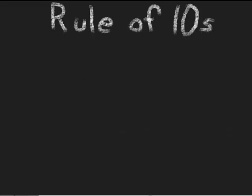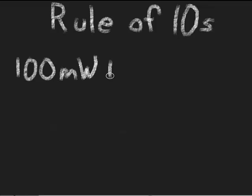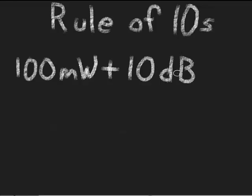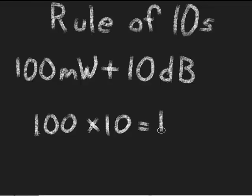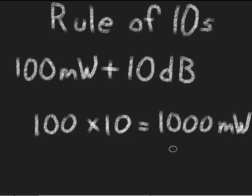Moving on to the rule of 10s, we'll do the same math. So if I have an access point that can do 100 mW, and I add an antenna to it that is supposed to give me 10 dB of gain, I know the rule says for every 10 dB of gain, I multiply by 10. I would take my 100 times 10 equals 1,000 mW, or another way is just to say 1 W.